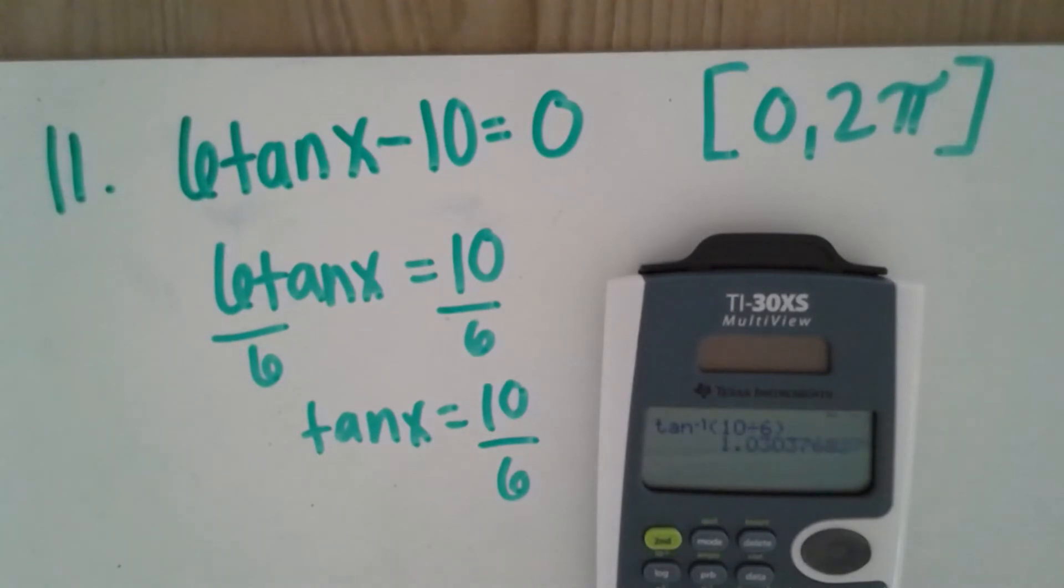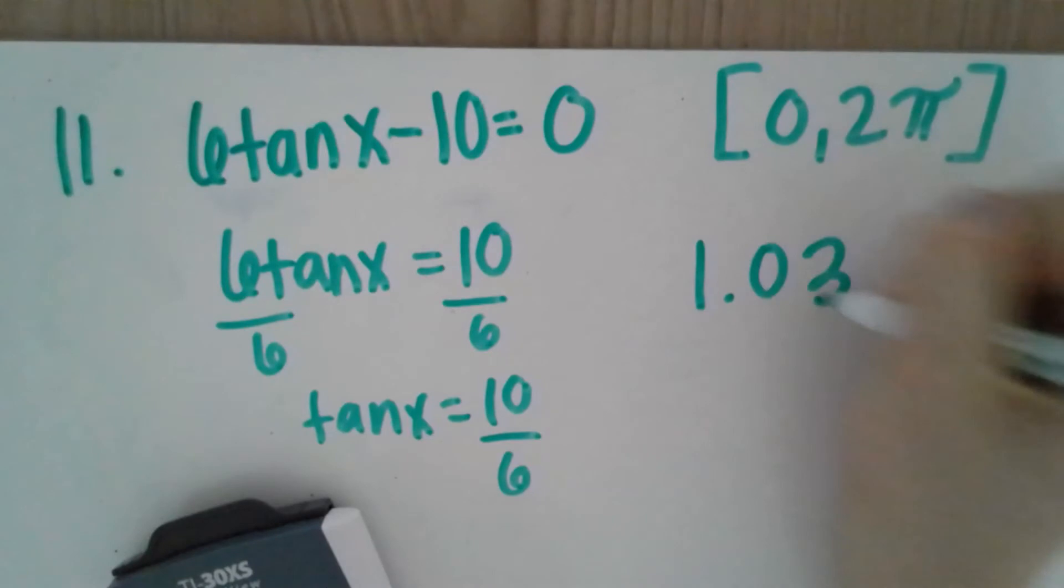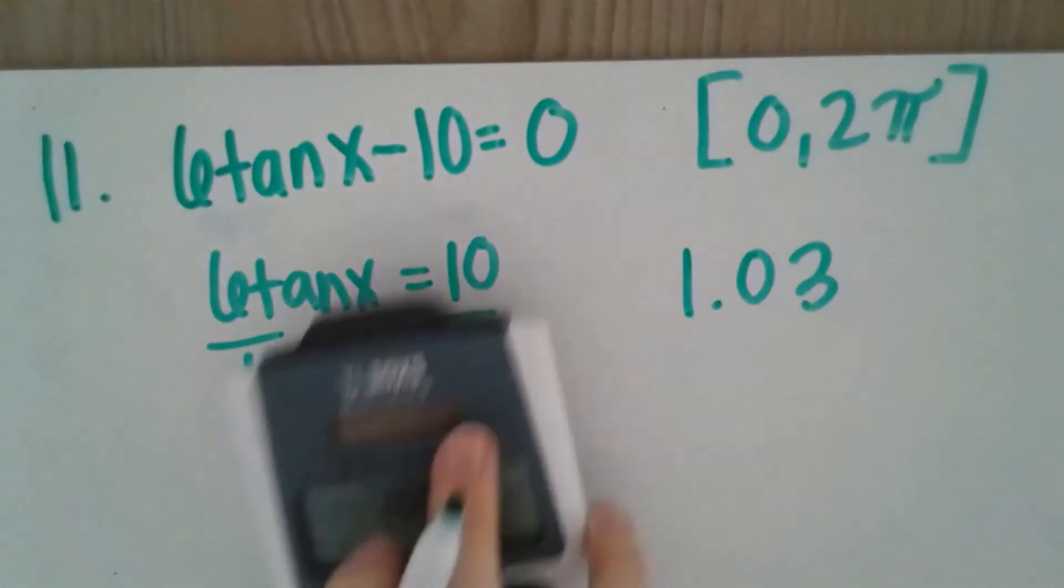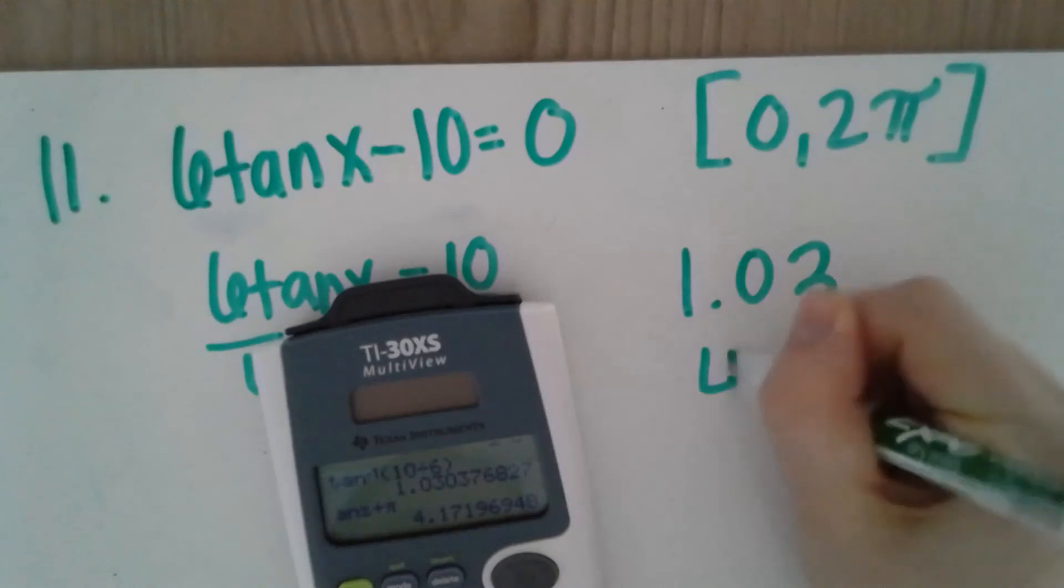So it spits out 1.03. Note that the cycle of tangent is π, so we will add π in this case to get 4.17.